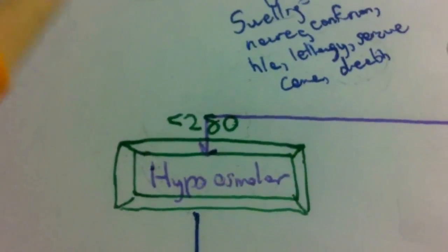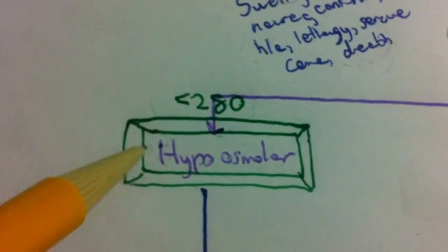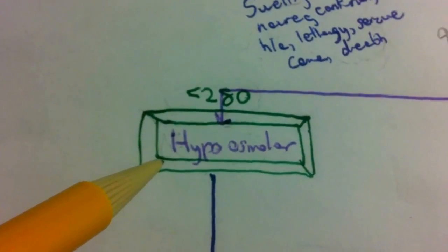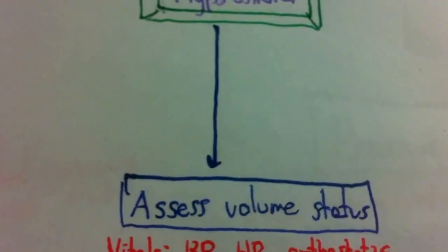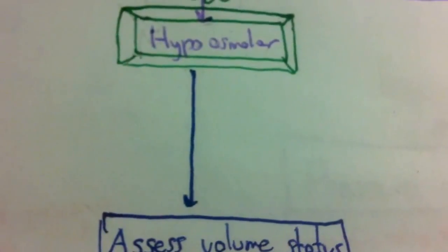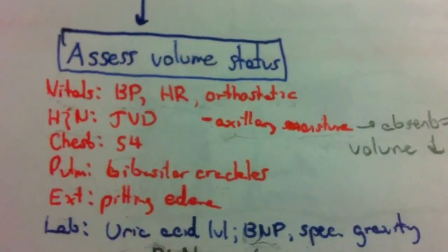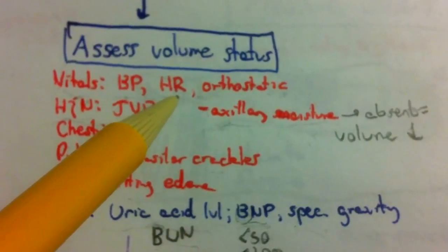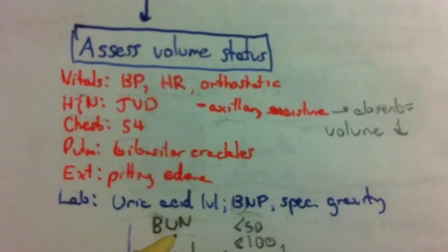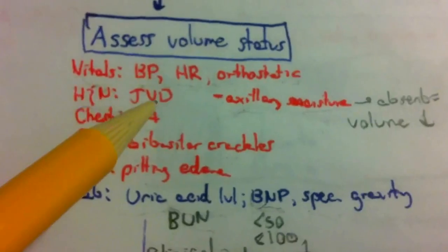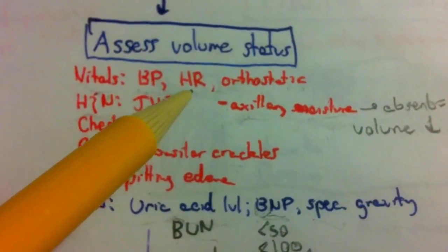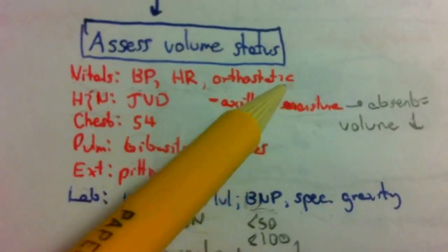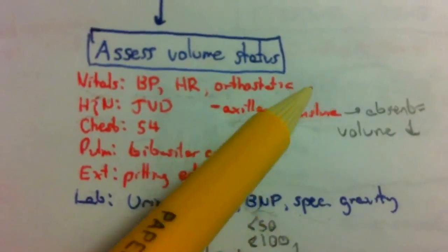Now let's look at hypoosmolar hyponatremia - the true hyponatremia. The next step is to assess the patient's volume status. This is tricky and even experienced clinicians have difficulty with it. For vitals: if the patient has low blood pressure and high heart rate, or orthostatics - defined as a rise of 20 mmHg systolic and 10 mmHg diastolic when going from lying to standing - that indicates volume depletion.